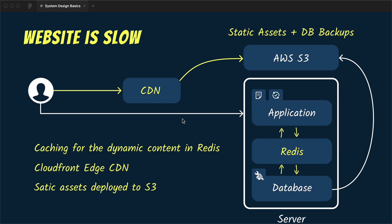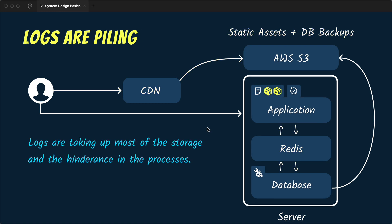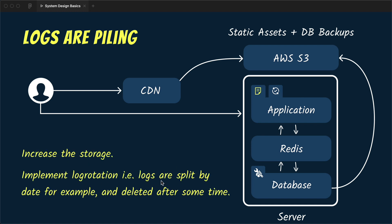Some time goes by and we notice our storage is increasing abnormally. We find out that logs are taking most of the space, and this lack of disk space is causing processes to slow down. To fix this we implement log rotation, which splits log files by date and deletes older logs after some time, so logs don't pile up and take up space abnormally. With this the server is back to normal and the slowness caused by lack of disk space is gone.